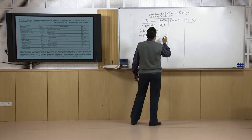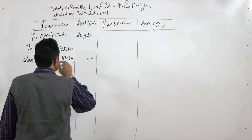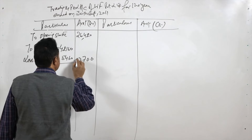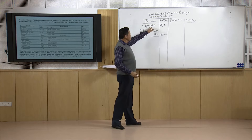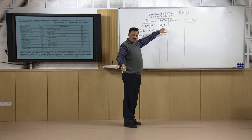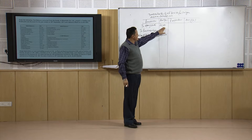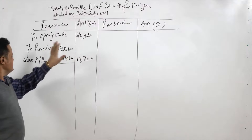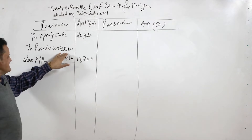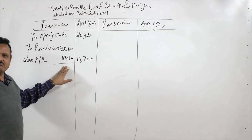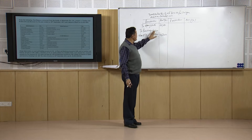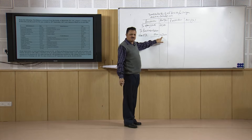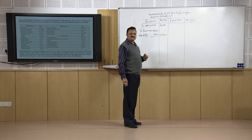The balance after subtracting purchase returns works out to 33,700 rupees net purchases for the year. So first we used the opening stock of 26,420 rupees, then purchased material for 42,160 rupees, returned 8,460 rupees worth due to quality issues or excess, leaving net purchases of 33,700 rupees used for current year's production.